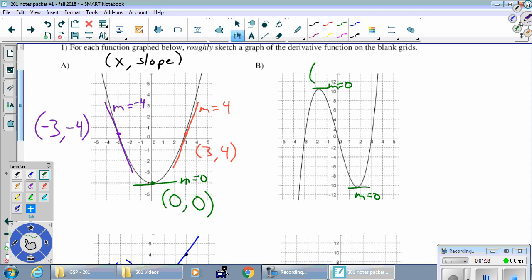And so we'll estimate the coordinates here, negative 1.8, comma, slope is 0. And then over here, maybe symmetric 1.8, comma, 0.